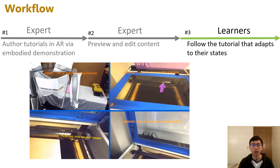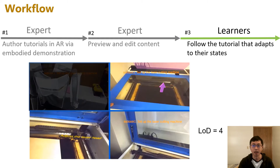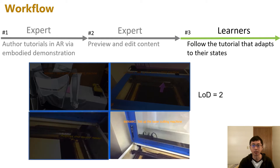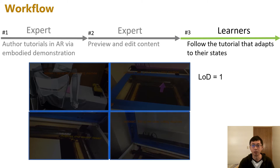Now we have four tutoring elements. When the learner starts to follow the tutorial, AdaptTutor adjusts the tutorial elements in terms of five possible levels of detail. When the level is five, the system shows all four elements. At level four, it hides the avatar and shows the other three. At level three, only expectations and subtask descriptions are shown. At level two, only subtask descriptions are shown. And finally, at level one, no elements are shown.